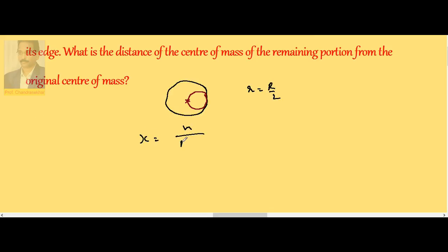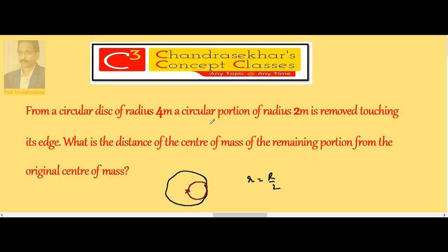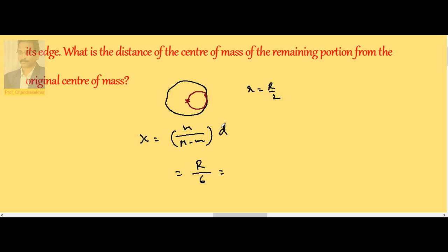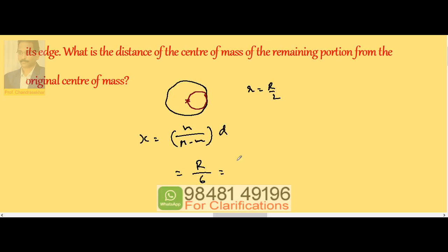The final substitution gives r by 6. So with r equal to 4 meter, that gives 2 by 3 meter. This is the shift in the center of mass.